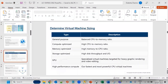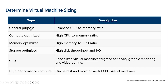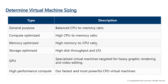General purpose VMs have a balanced ratio between CPU and memory. Compute optimized VMs have high CPU compared to memory. Memory optimized VMs have high memory compared to CPU — for example, 14 GB, 20 GB, up to 100 GB. You cannot attach a physical CPU or hard disk; everything must be allocated virtually.